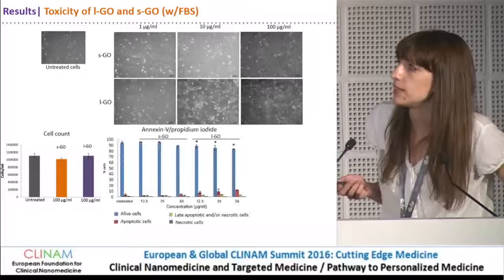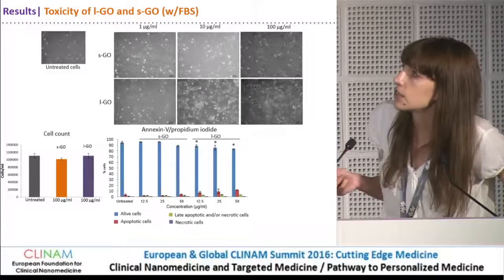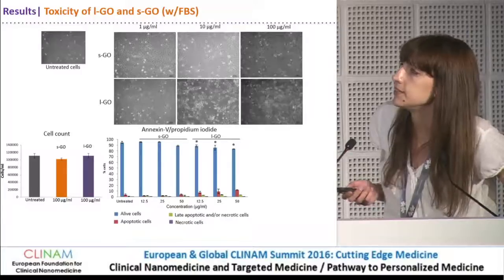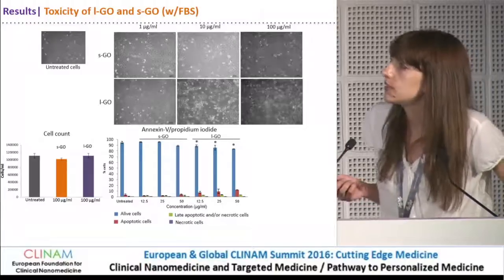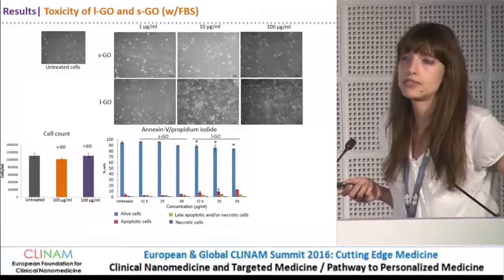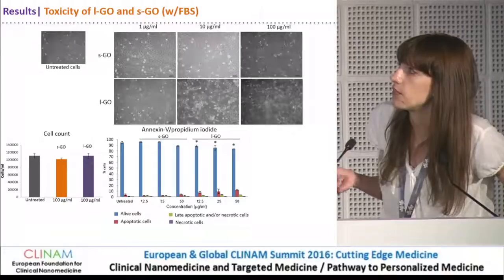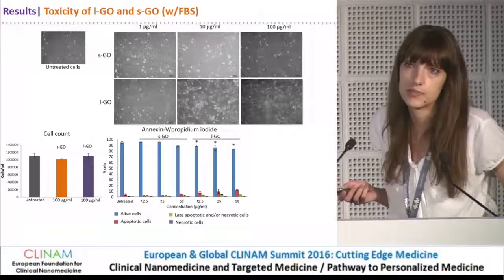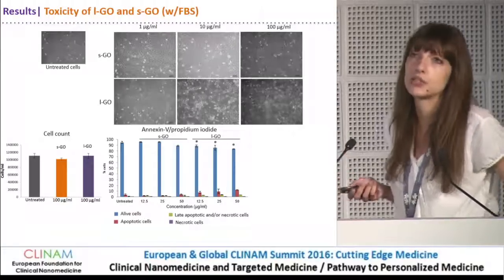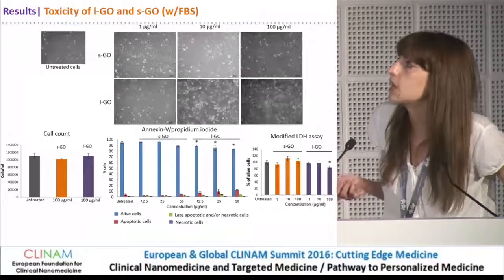Cell count did not reveal any significant difference between the treatments. Performing the Annexin-5/propidium iodide assay, we could see the dose-dependent decrease in percentage of alive cells only after treatment with the large graphene oxide. However, after treatment with the small material in the presence of serum, it was completely non-toxic for the cells.